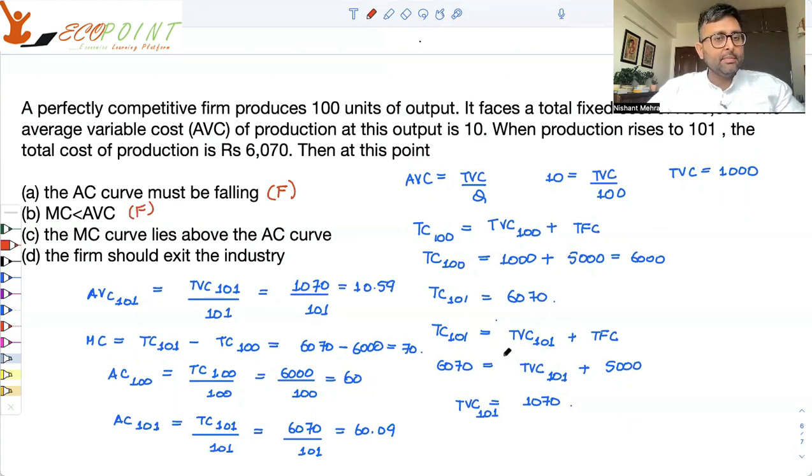MC curve lies above the AC curve. Is MC more than AC? Yes. MC is what? 70. AC is what? 60.09. MC is above. This is true.